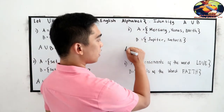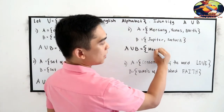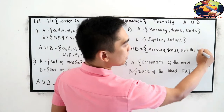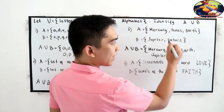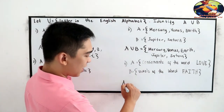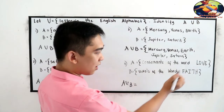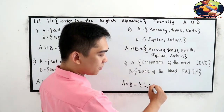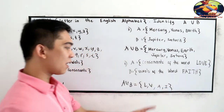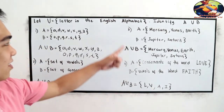For number 3, A union B = {Mercury, Venus, Earth, Jupiter, Saturn}. For number 4, A = consonants of 'love' = {L, V} and B = vowels of 'faith' = {A, I}. So A union B = {L, V, A, I}. Make sure to use proper bracket notation for your set.